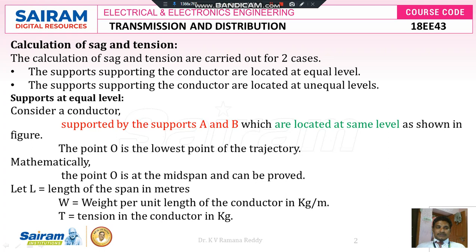The first case is where the supports supporting the conductor are located at equal level, and the second case is where the supports — that means towers — supporting the conductor are located at unequal levels. First, we are going to discuss the concepts where supports are at equal level.